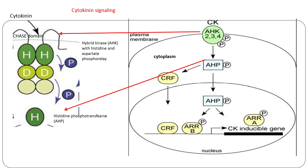Phosphorylated type B ARRs are positive regulators of the cytokinin response and bind to the promoters of cytokinin response genes, leading to their transcription. On the other hand, type A ARRs, when phosphorylated by AHP, act as negative regulators of cytokinin responses, probably because they reduce phosphotransfer from AHP to type B ARRs. Type B ARRs also lead to transcription of type A ARR genes, which serve in attenuating expression of cytokinin response genes.